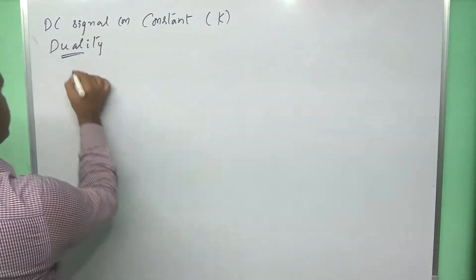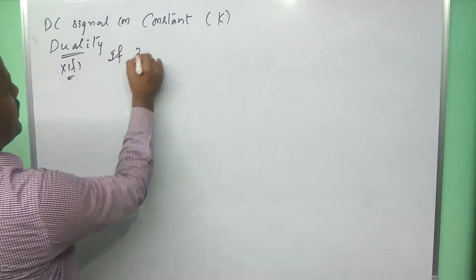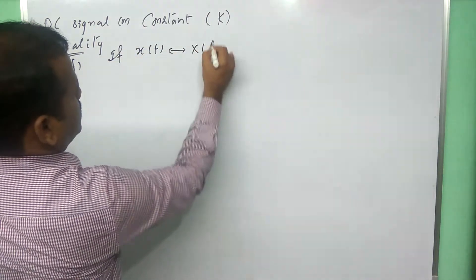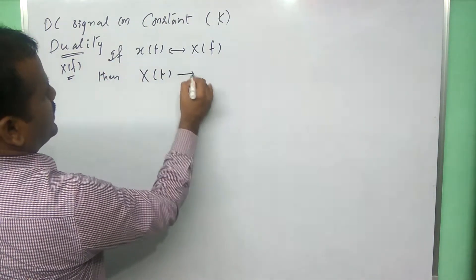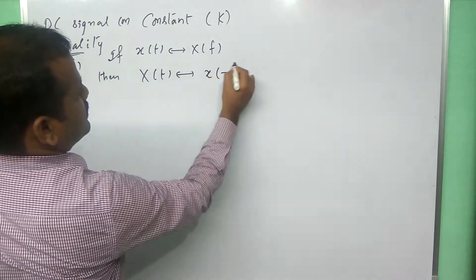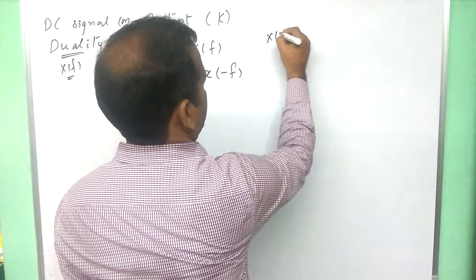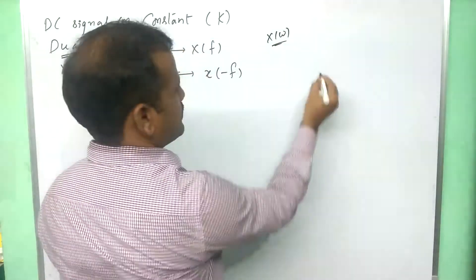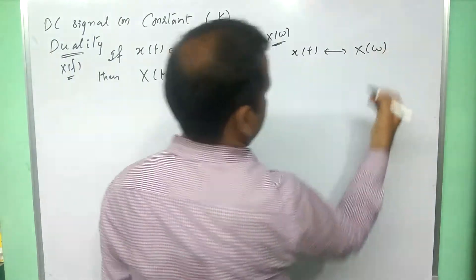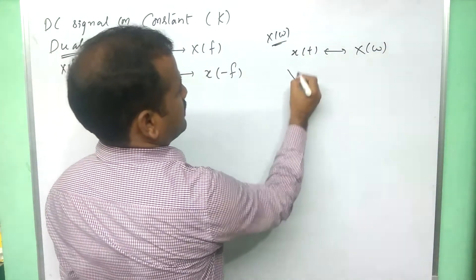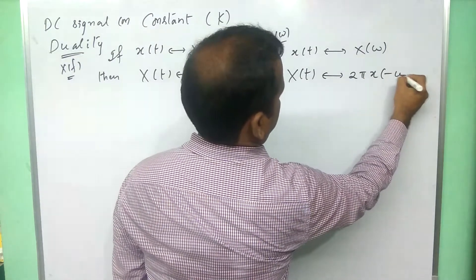First, for X of f analysis, the duality property statement is like this: if x of t has Fourier transform X of f, then capital X of t has Fourier transform small x of minus f. And for X of omega analysis, the same statement is: if x of t has Fourier transform X of omega, then capital X of t has Fourier transform 2 pi times small x of minus omega.